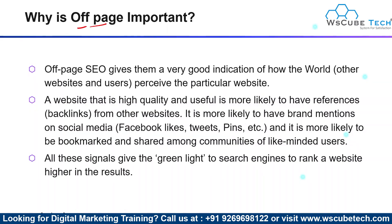Why do we do off-page SEO? Is on-page SEO sufficient? The answer is no. Off-page SEO gives search engines a very good indication of how the world — meaning other websites or users — receives a particular website. A website that is high quality and useful is more likely to have references, that is backlinks from other websites, and more likely to have brand mentions on social media like Facebook and Twitter, getting likes, tweets, and pins. It is also more likely to be bookmarked and shared among communities of like-minded users. All these signals give the green light to search engines to rank the website higher in the search results page.